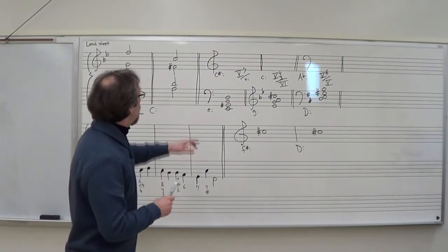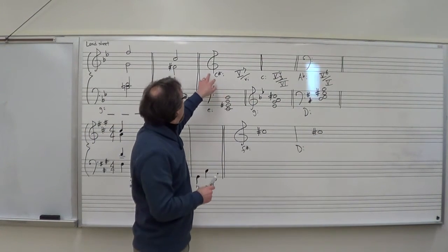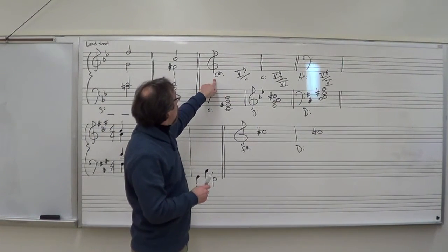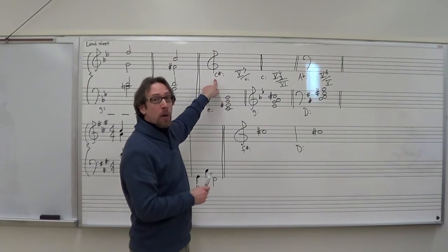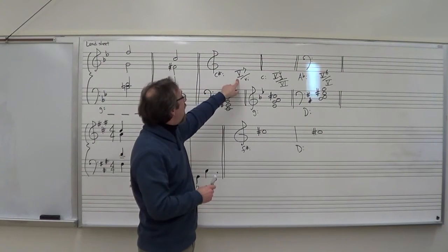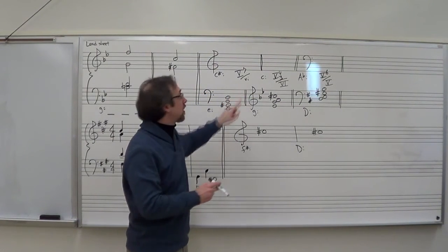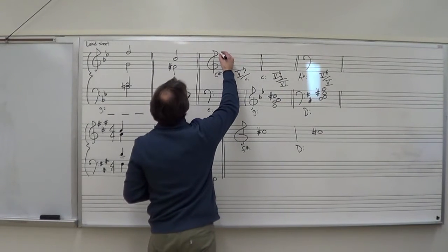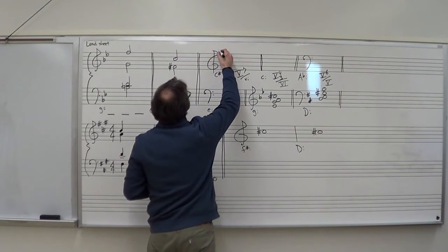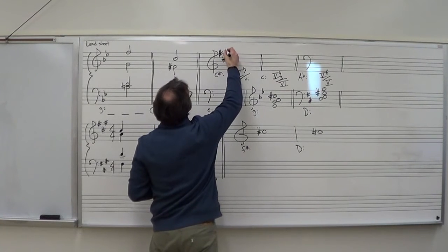First, we're going to look at and go over spelling. C-sharp minor is the key. We want a 5-7 of 6. Let's start by putting in our key signature. C-sharp minor is the same as E major, which means 4 sharps.